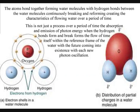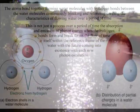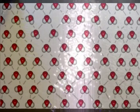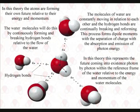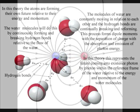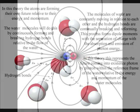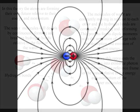We have oxygen and hydrogen forming standing waves over a period of time in the form of water molecules. In this theory, the atoms do not just form standing waves over a period of time, but they form their own future relative to their energy and momentum. The water molecules will do this by continuously forming and breaking hydrogen bonds relative to the flow of the water. The molecules of water are continuously moving in relation to each other, and the hydrogen bonds are continuously breaking and reforming.